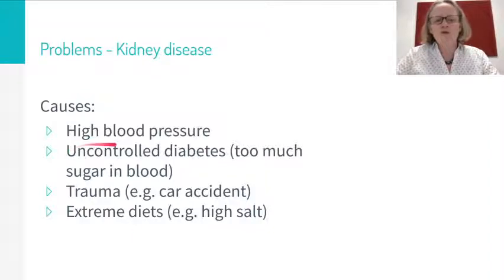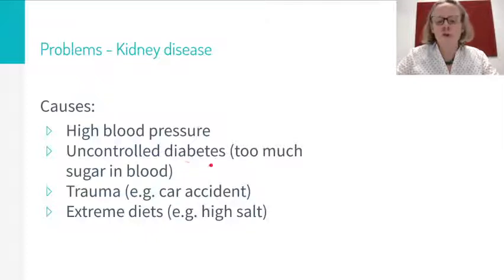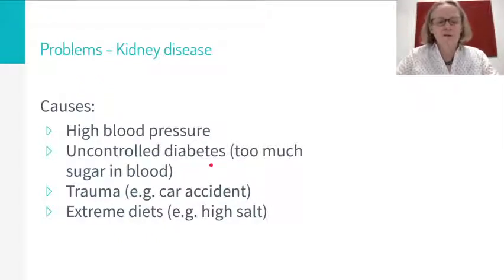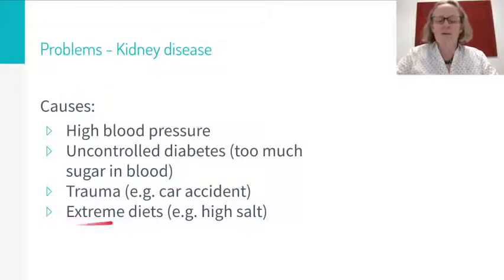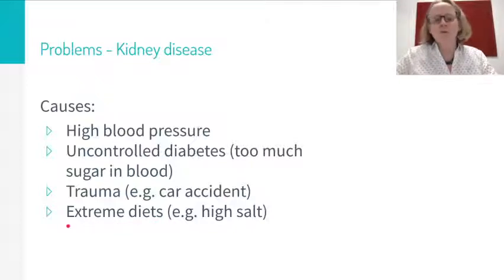uncontrolled diabetes — that's a disease where you can't control how much sugar is dissolved in your blood — perhaps trauma like a car accident or a bike accident, or extremes of diets. Maybe high sugar or high salt diets might cause problems with your kidneys.